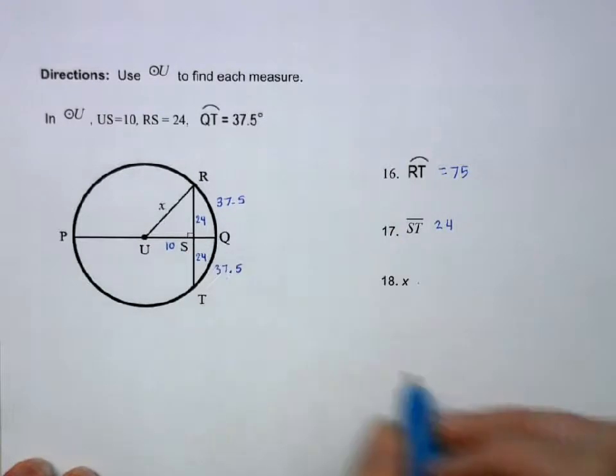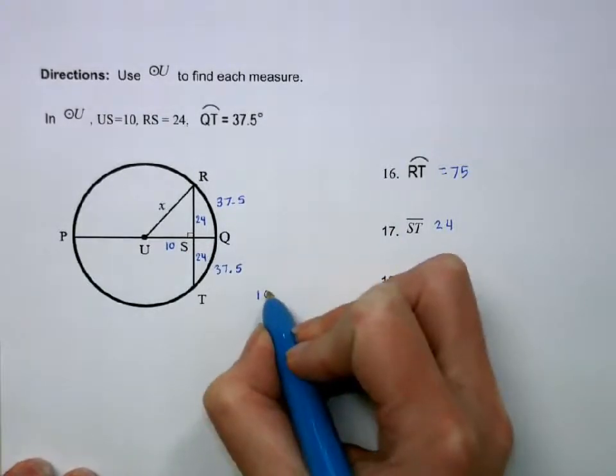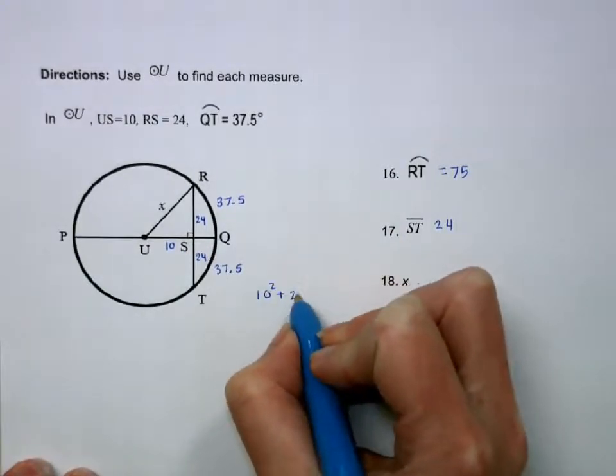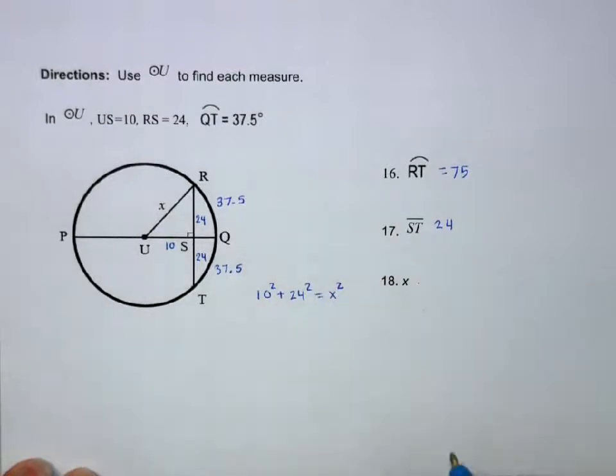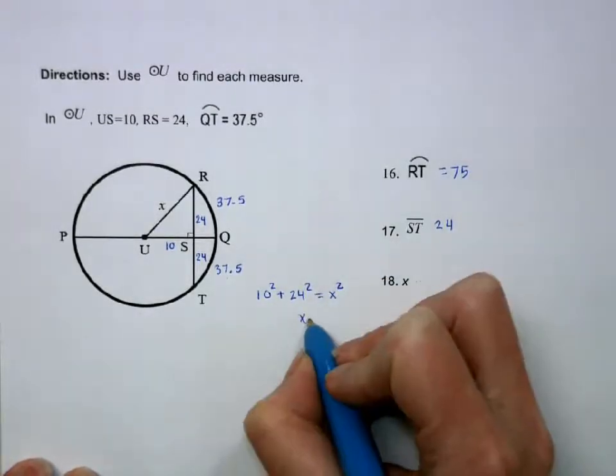And then for X, if this is a right angle, we can use our Pythagorean theorem to find X. Okay, so when you do this, you're going to find that X is 26.